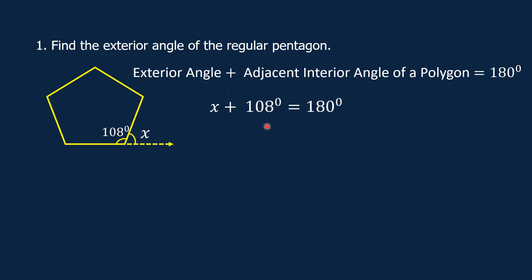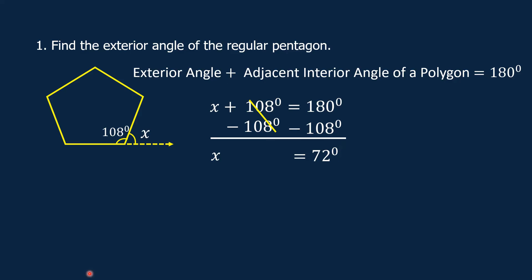To solve for x, we must get rid of 108 degrees from the left side. We can do that by subtracting 108 degrees from both sides to keep the equation balanced. Bring down x. 108 degrees minus 108 degrees equals 0, so we can cancel this. 180 degrees minus 108 degrees is equal to 72 degrees. So x, which represents the exterior angle of the regular pentagon, is equal to 72 degrees.